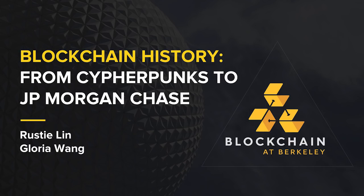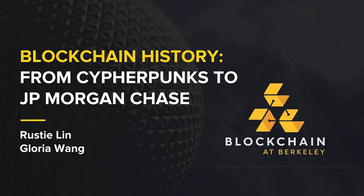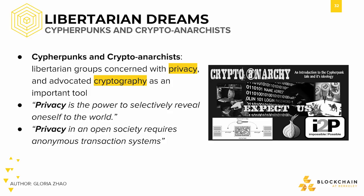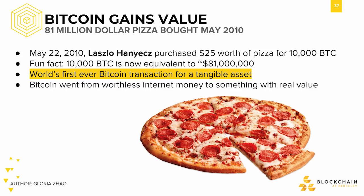After breaking down how Bitcoin works, we dived into the history of Bitcoin and blockchain. We learned about cypherpunks, crypto-anarchists, and the fight for privacy. We examined some early attempts at making a cryptocurrency, such as Digicash, Hashcash, and B-money, before finally arriving at Satoshi Nakamoto and his invention, Bitcoin.